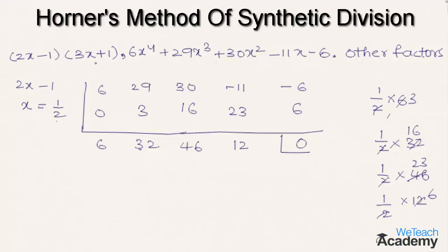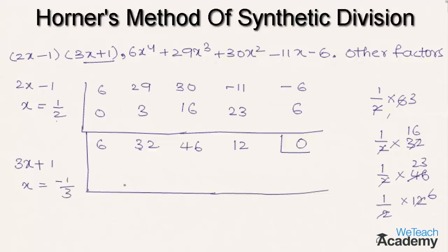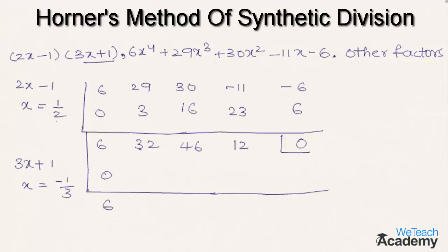Now let us consider the other factor, 3x+1, which gives us the multiplier x = -1/3. The next row starts by writing 0 below the first coefficient, so 6 + 0 = 6. Multiplying -1/3 by 6: 3×1=3 and 3×2=6, so -1×2 = -2. We write -2 below the second element of the third row, 32.